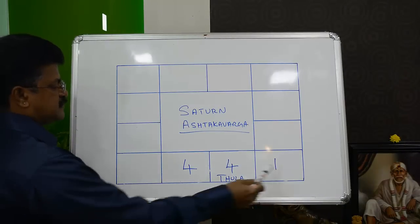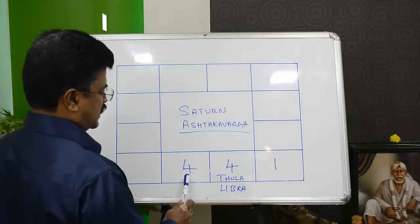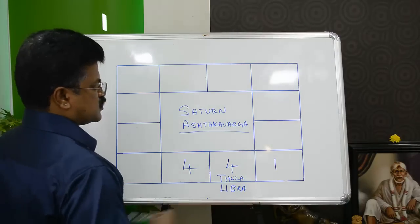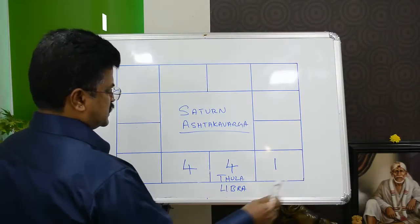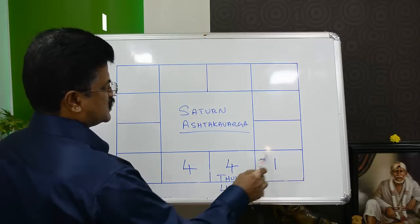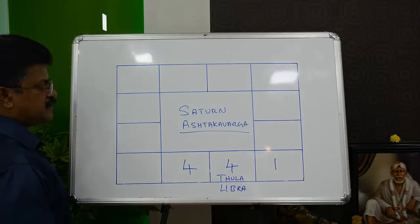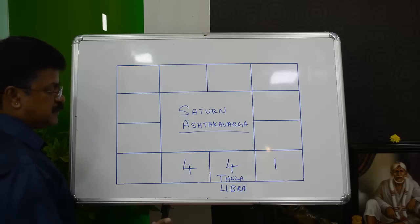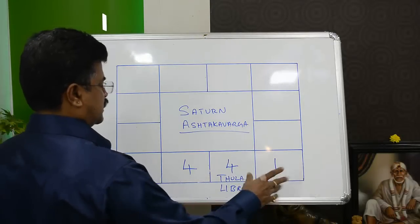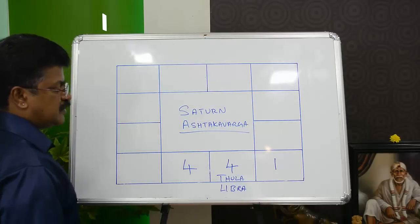A person having something like this is very lucky, because in these 2 signs there are 4 points each. So for this person with scores of 1, 4, and 4, only the first 2.5 years of the 7.5-year Saturn is likely to be troublesome. For this person, instead of 7.5-year Saturn, you can even call it a 2.5-year Saturn.